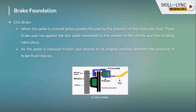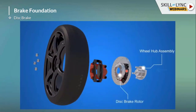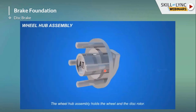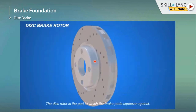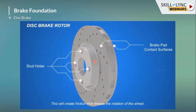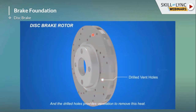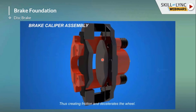Let me show you the video of the disc brake operation. These are the displayed components: the wheel hub assembly and the disc rotor. This is the disc plate — the drilled vent holes are provided in the disc so that the heat generated from friction can be eliminated. This is the caliper unit, and this is the brake pad that rubs against the disc.